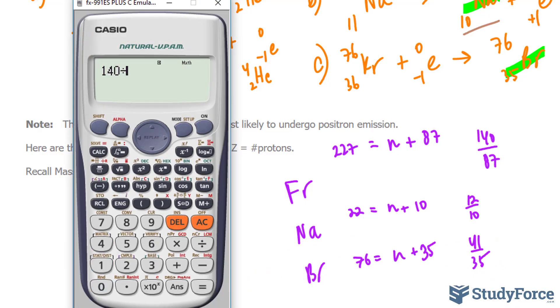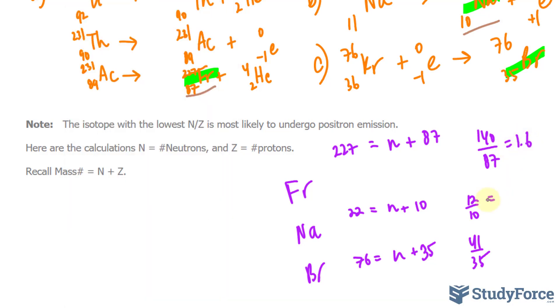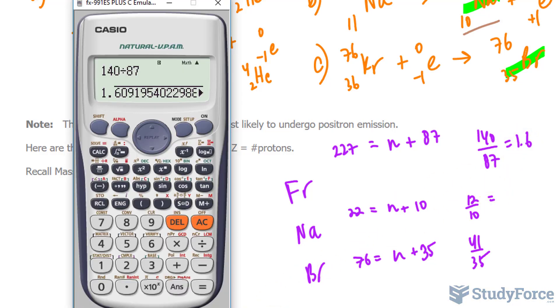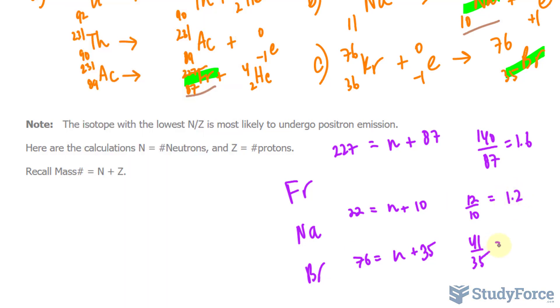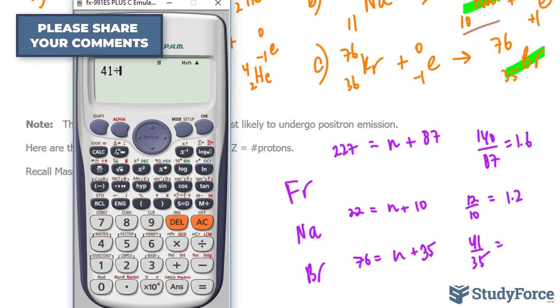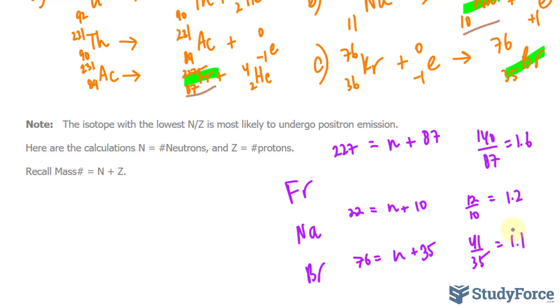Let's find out which one's the smallest. 140 divided by 87 equals 1.6. This one's 12 divided by 10, 1.2. So far this is the smallest one. And 41 divided by 35 is 1.1. This is the smallest ratio, and because of that, it's most likely to undergo positron emission. That is how to write nuclear equations for beta decay, positron emission, and electron capture.